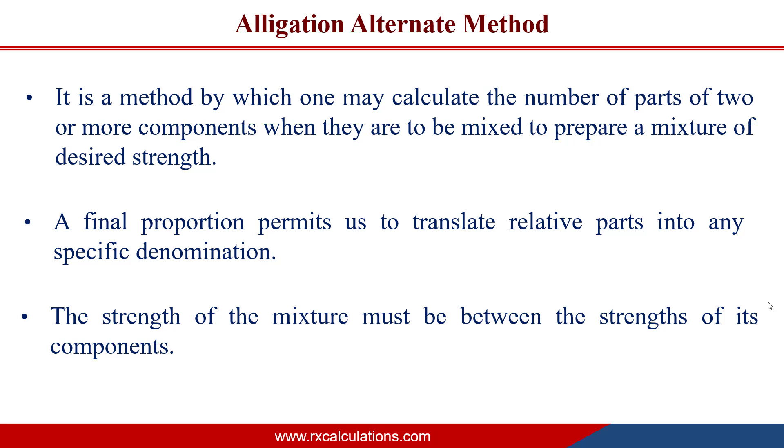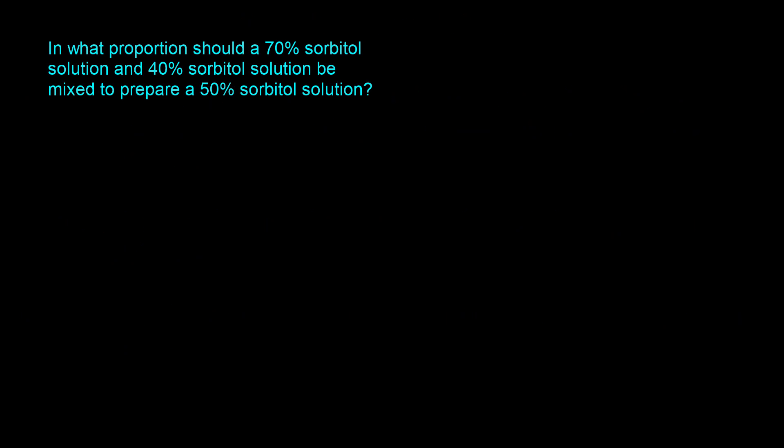I'm going to switch screens and look at one example of how the alligation alternate method works, and then I'll tell you why it actually works the way it does. On the left-hand side I'll solve an example, and on the right-hand side I'll demonstrate the mathematical validity of the method.